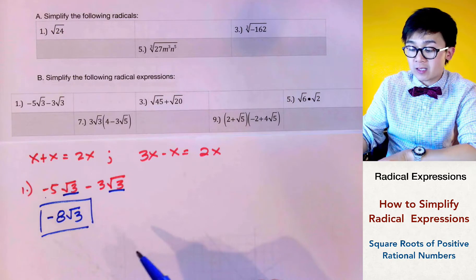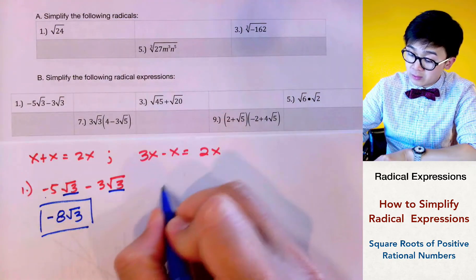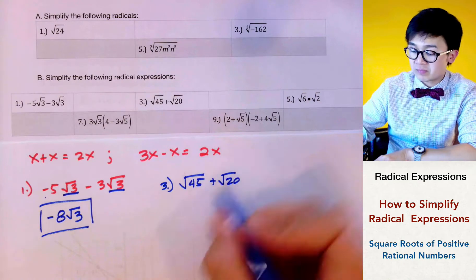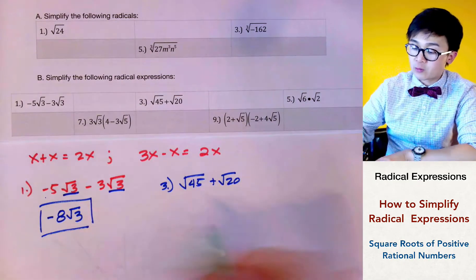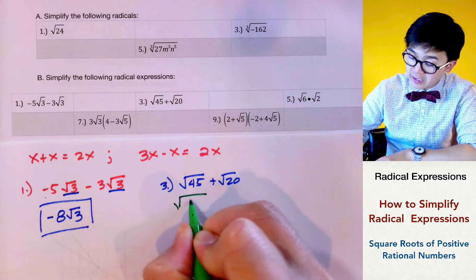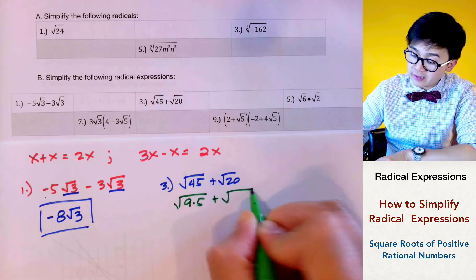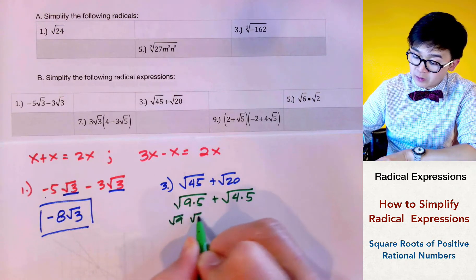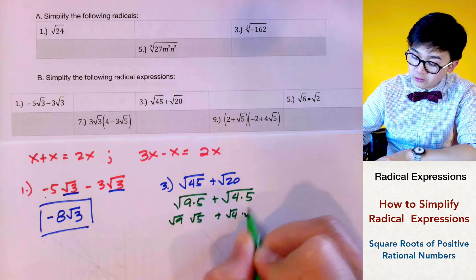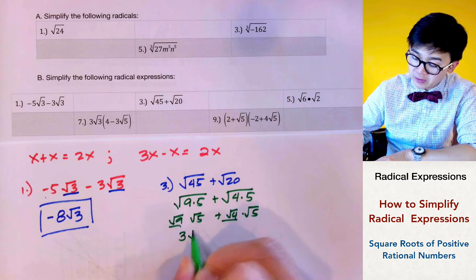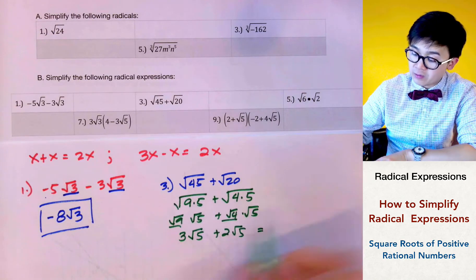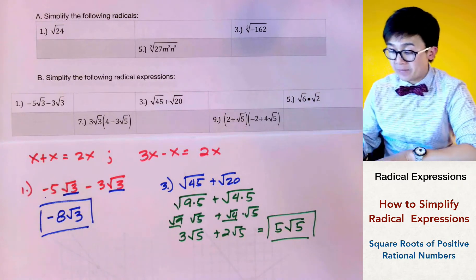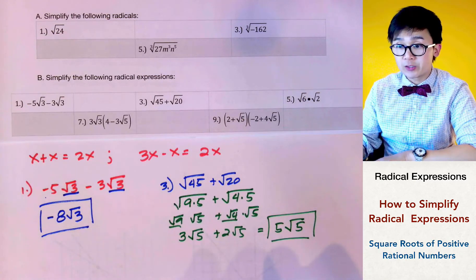The radicals must be identical to combine them. In example number 3, the square roots are not identical, so we can't add them directly. However, square root of 45 simplifies to square root of 9 times 5, and square root of 20 simplifies to square root of 4 times 5. Since square root of 9 and square root of 4 are perfect squares, we get 3 square root of 5 plus 2 square root of 5, which equals 5 square root of 5.